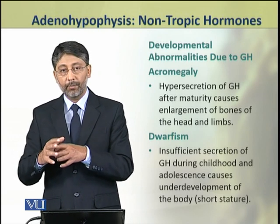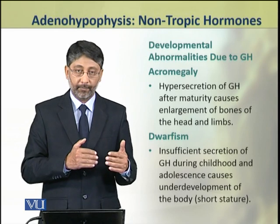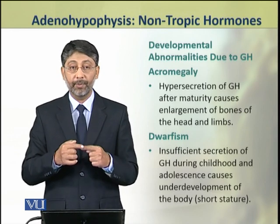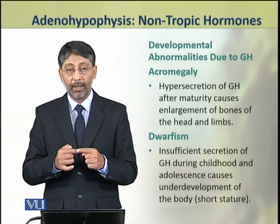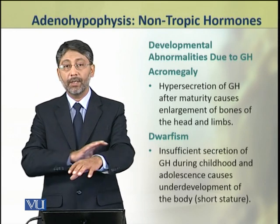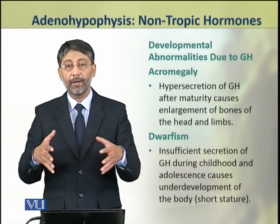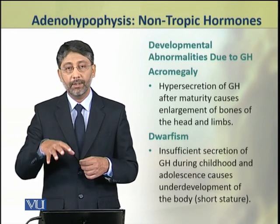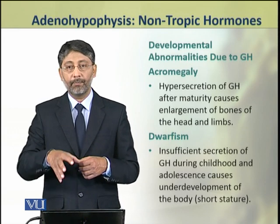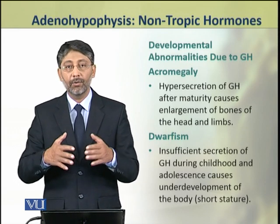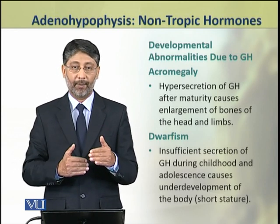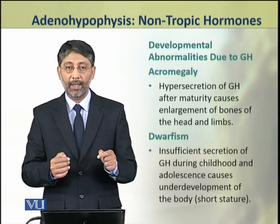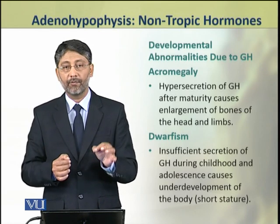The second condition is acromegaly. If growth hormone secretion is excessive after puberty, the bones of the head and the extremities become abnormally elongated, a condition called acromegaly. The third condition is dwarfism — if growth hormone secretion is deficient during childhood before puberty, the developmental age, then dwarfism results, in which stature remains short. This is commonly called 'bonapan' in everyday language, and is caused by deficiency of growth hormone.